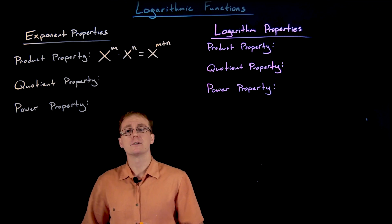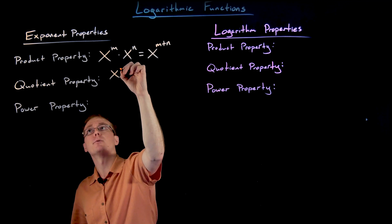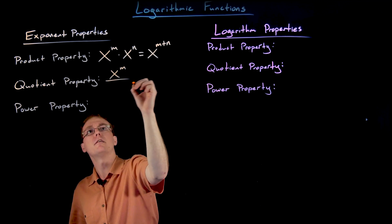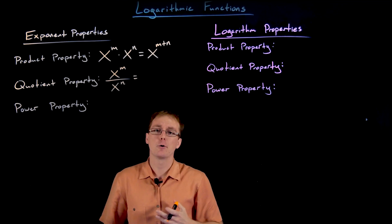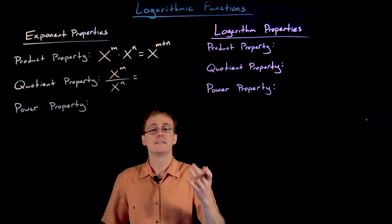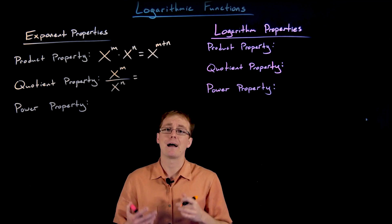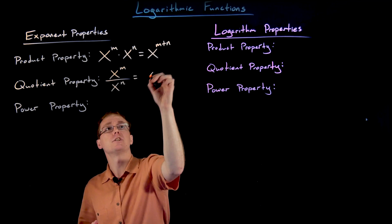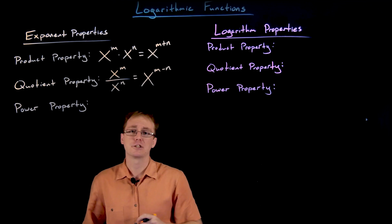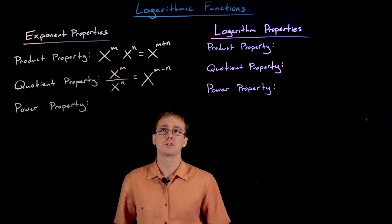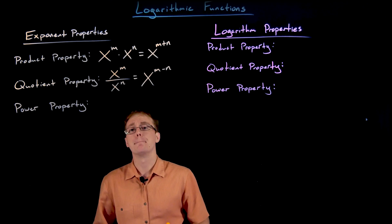Our next property for exponents is the quotient property for exponents. It's very similar to the product property, but it says if you have x to the power of m divided by another exponential of the same base x to the power of n, instead of adding the exponents we subtract them, and we can write this as a single exponential x to the power of m minus n.